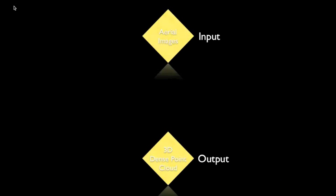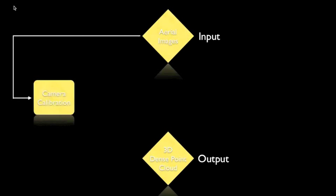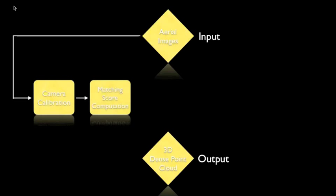With the input images, our algorithm first calibrates the camera poses along the UAV flight path. The algorithm then computes a matching score on each pixel in the reference image at each discrete height level.